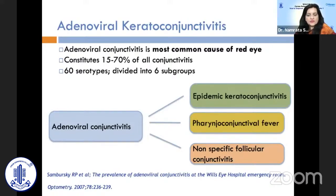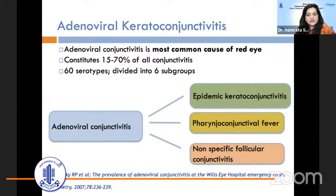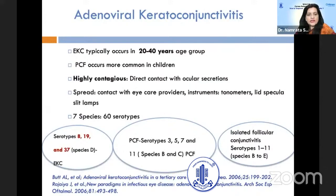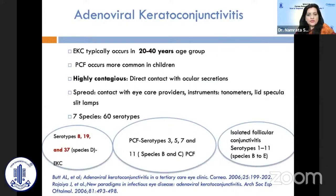There are 60 serotypes divided into six groups, and it can occur as epidemic keratoconjunctivitis, pharyngoconjunctival fever, or non-specific follicular conjunctivitis. The typical age group is 20 to 40 years. Pharyngoconjunctival fever occurs most commonly in children and is highly contagious through direct contact with ocular secretions, and also through eye care providers' instruments such as tonometers, lid specula, and slit lamps.